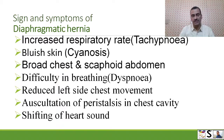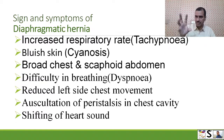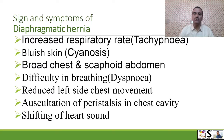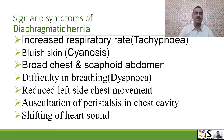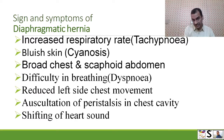Difficulty in breathing, definitely dyspnea. Reduced left side chest movement because abdominal organs are on the left side, so during respiration only the right side chest moves more. Auscultation of peristalsis in the chest cavity — if we auscultate, peristaltic movements can be heard. Shifting of heart sound: normally heart sounds are heard on the left side, but due to the presence of abdominal organs in the chest cavity, there is a mediastinal shift.